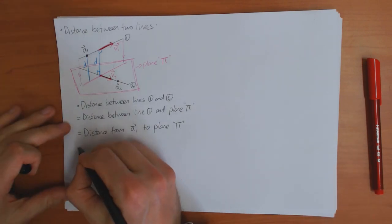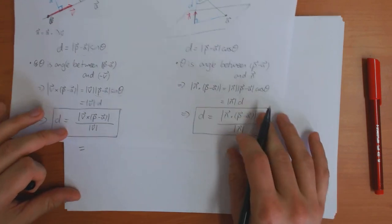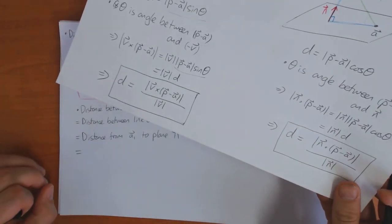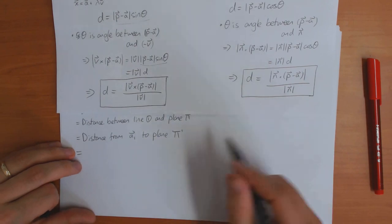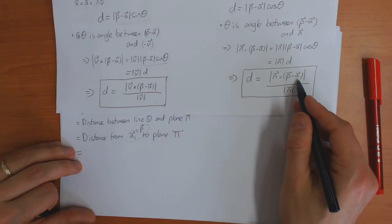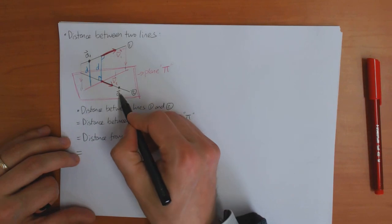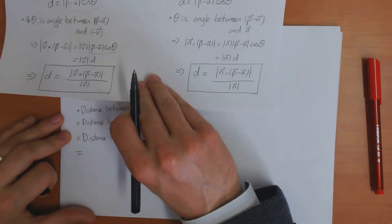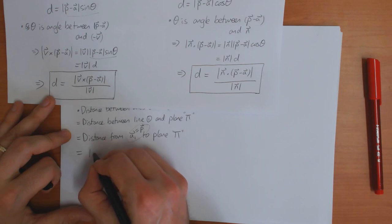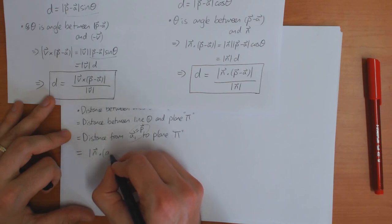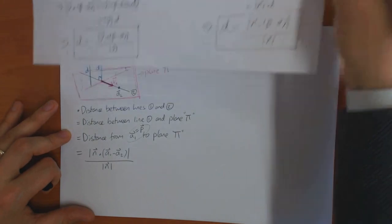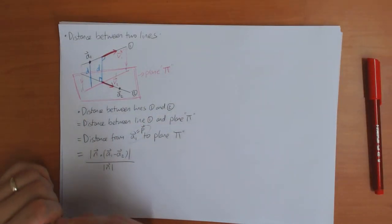Using the point-to-plane formula, A₁ plays the role of P and A₂ is the point on the plane, so the distance is N · (A₁ − A₂) / |N|. We don't know N yet, so I need to find it. N is the normal to the plane.